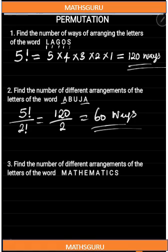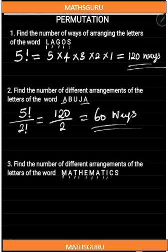The last question is: find the number of different arrangements of the letters of the word Mathematics. Just like we've done before, we are going to consider the letters of this word as though they are all distinguishable. We have one, two, three, four, five, six, seven, eight, nine, ten, eleven — so we have eleven letters, which gives us eleven factorial. Then we count the number of indistinguishable letters.